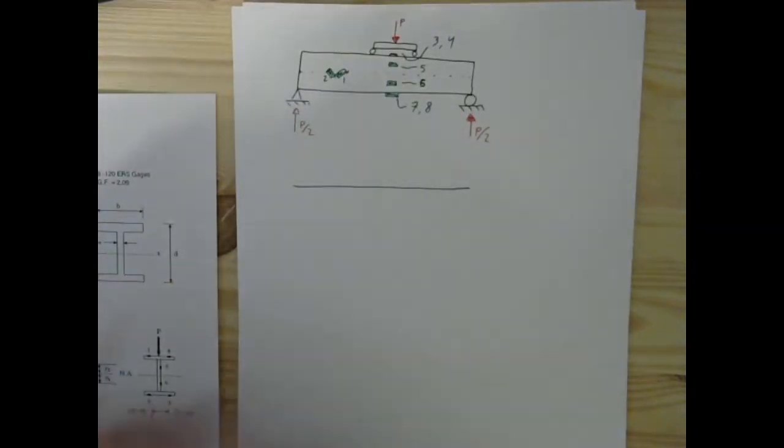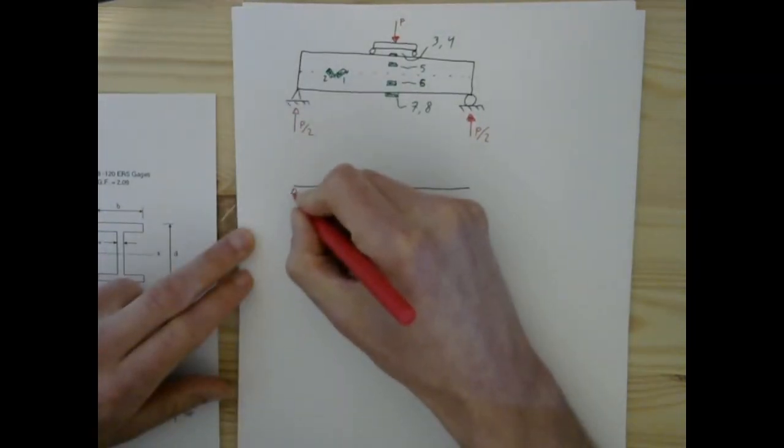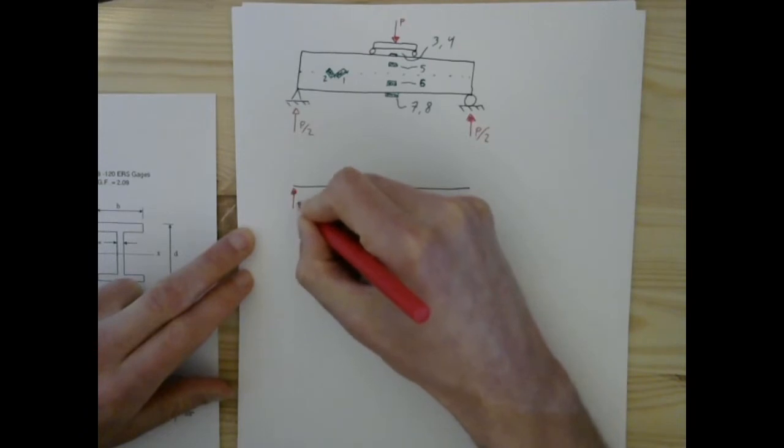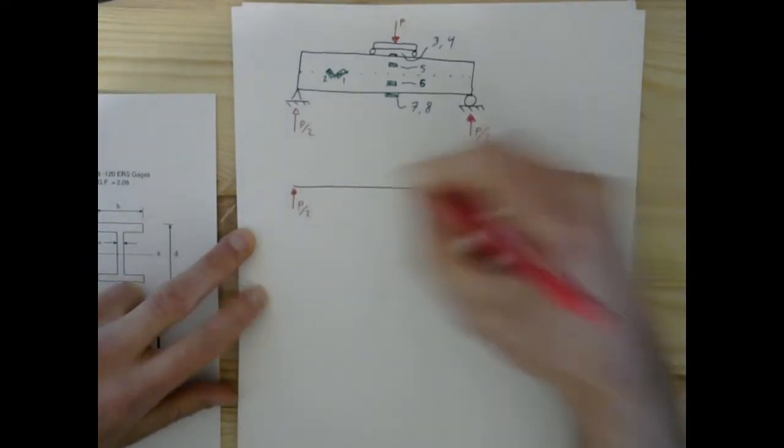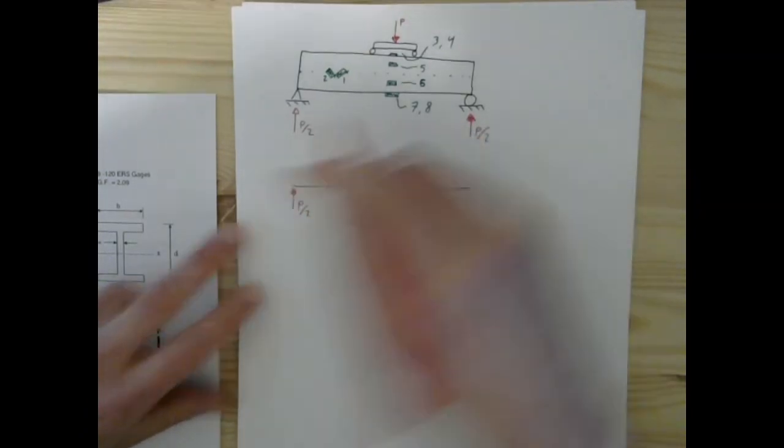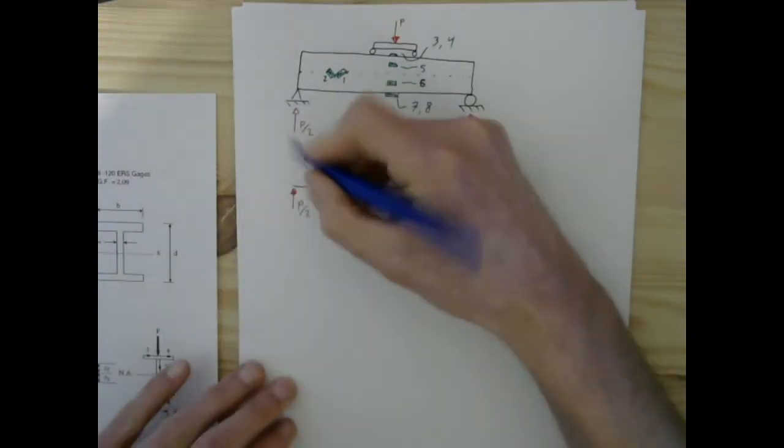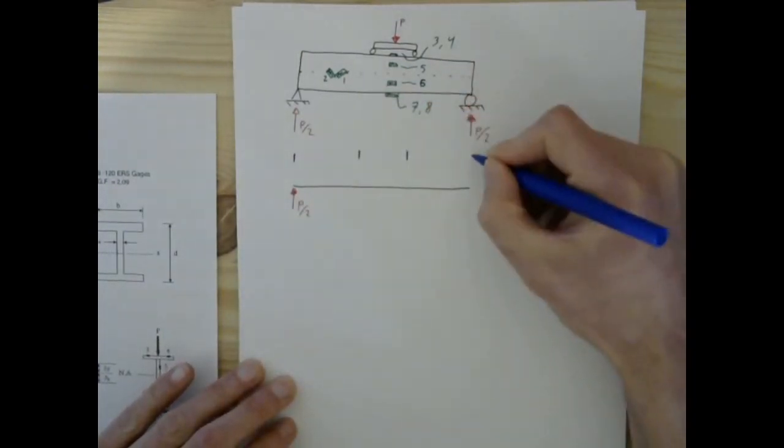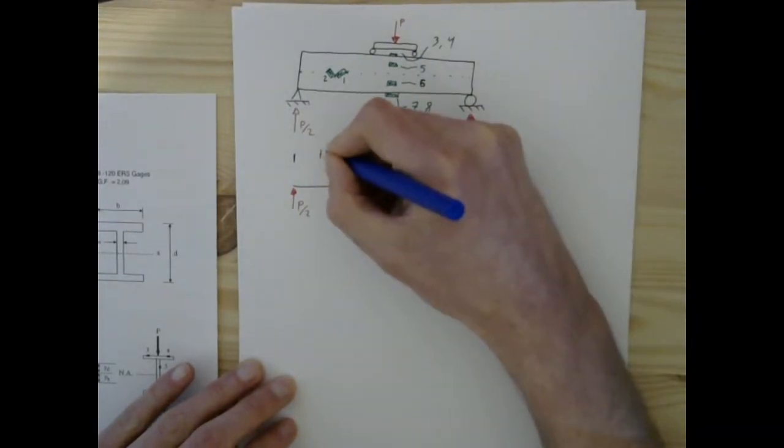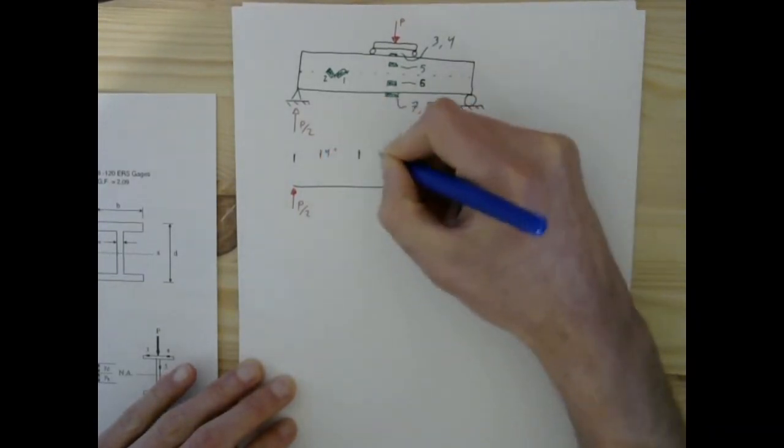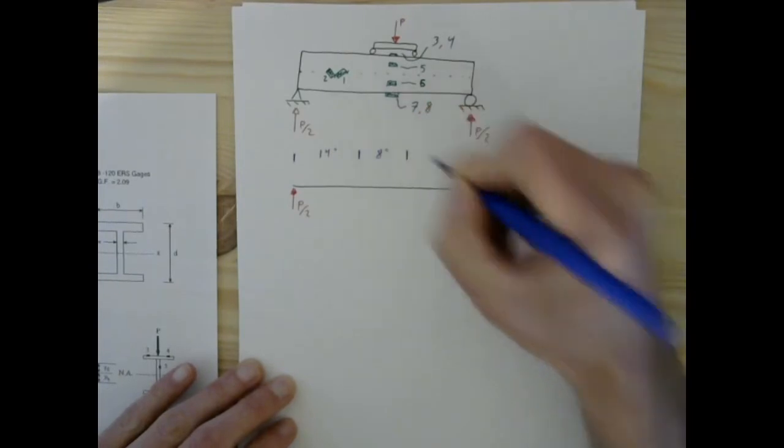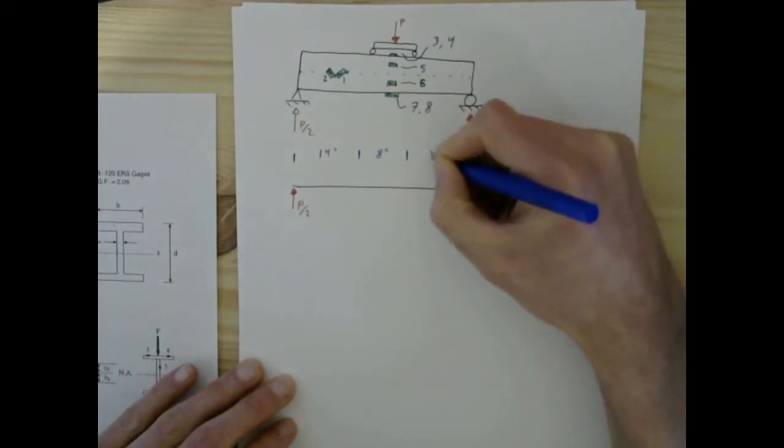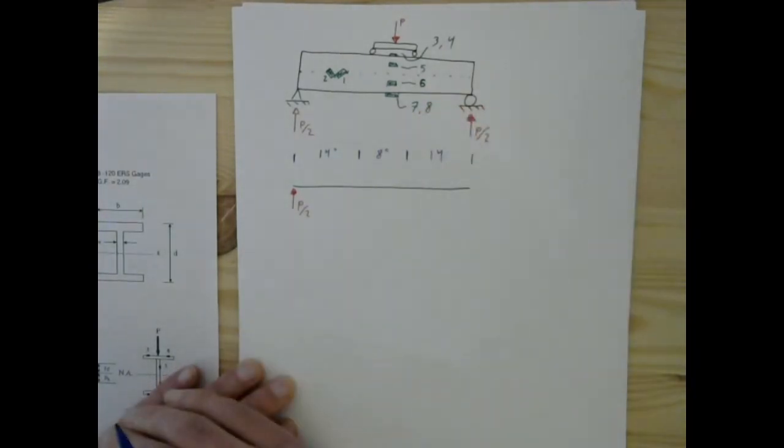Here's going to be our free body diagram. Break this down here. We're going to have P over 2. Then we're going to have this length right here. In this case, of this beam, this will be 14 inches. This will be 8 inches. And this will be 14 inches.